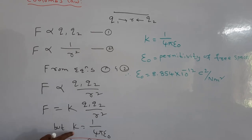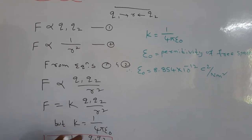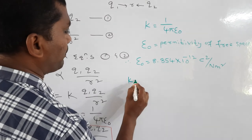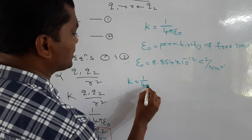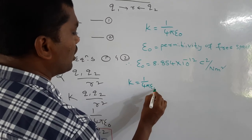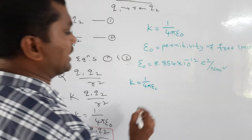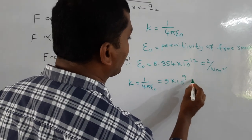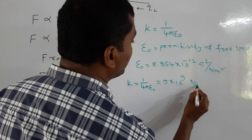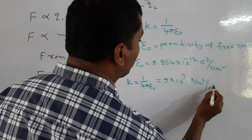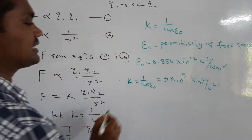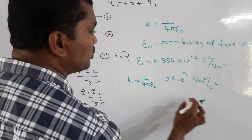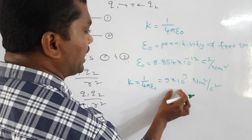The value of K equals 1 over 4 pi epsilon naught, which works out to 9 times 10 to the power 9 Newton meter squared per Coulomb squared. This K value of 9 times 10 to the power 9 is used to solve problems related to Coulomb's law.